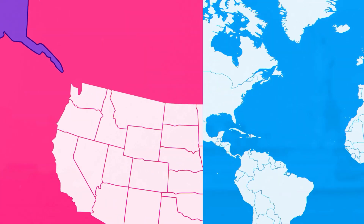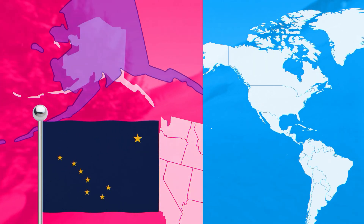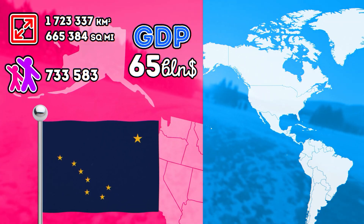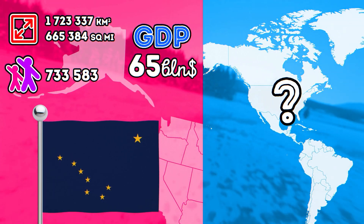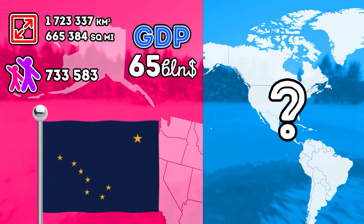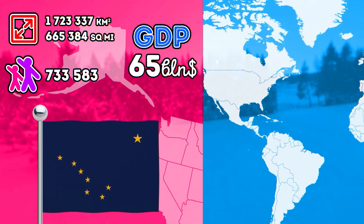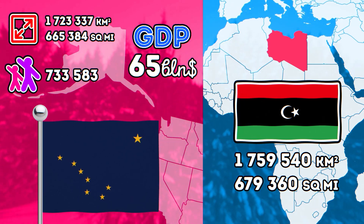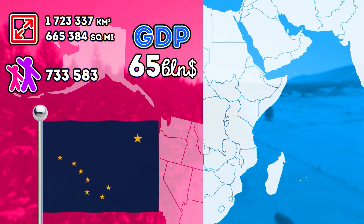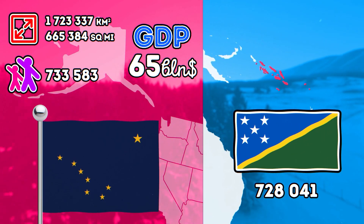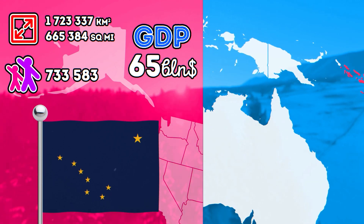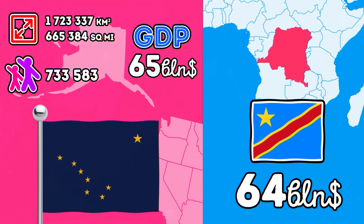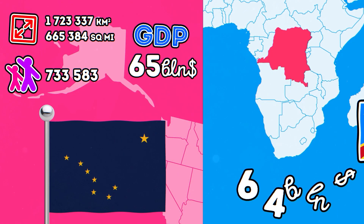The next state is Alaska. Alaska is the largest U.S. state, ahead of Texas. However, in terms of population and GDP, the state is not as impressive. In area, the state is comparable to Libya. The population is comparable to the Solomon Islands. And Alaska's GDP is slightly higher than that of the Democratic Republic of Congo.